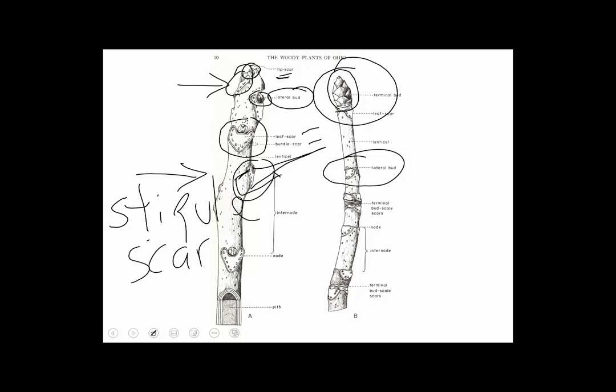The breathing pores—plants have to exchange oxygen and carbon dioxide—they do so through little holes in the twigs. They're called lenticels. Sometimes they're prominent and large, sometimes they're kind of inconspicuous.